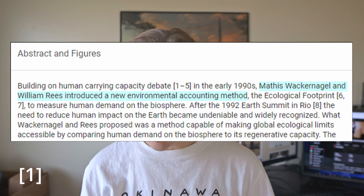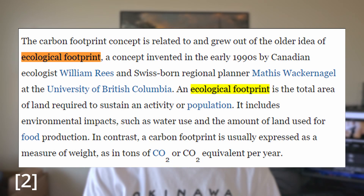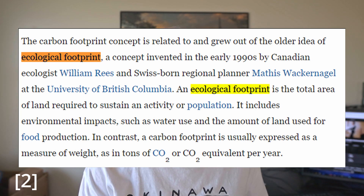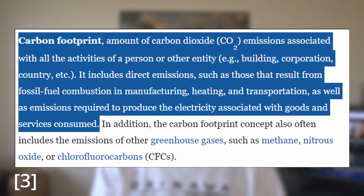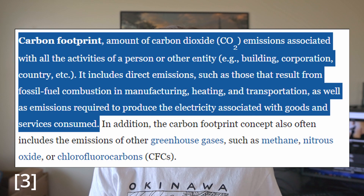Let's jump right in and talk about the history of carbon footprints. It originally started as the term 'ecological footprint,' coined by William Rees and Mathis Wackernagel in the early 1990s. According to Britannica, an ecological footprint is the total area of land required to sustain an activity or population, and includes environmental impacts like water use and food production. This is different from the newly popularized term 'carbon footprint,' which is based on the amount of CO2 emissions associated with all the activities of a single person, business, or country — including direct emissions from fossil fuels, heating, and transportation, as well as goods and services, your so-called invisible carbon footprint.